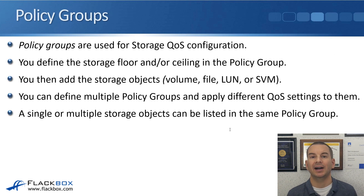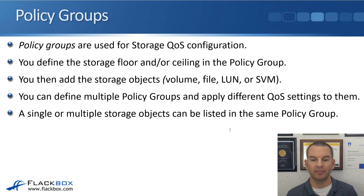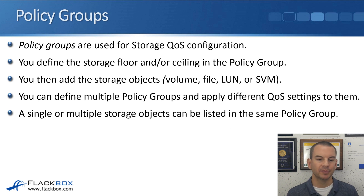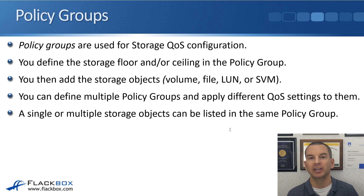To configure QoS, that's done with policy groups. You define the storage floor and/or ceiling in a policy group at the command line, then add the storage objects — volumes, files, or LUNs, or SVMs if you're setting a ceiling (not supported with floors) — to that policy group. You can define multiple policy groups and apply different QoS settings to them, so different workloads with different requirements can each have their own policy group.